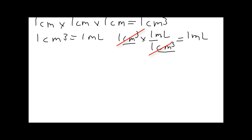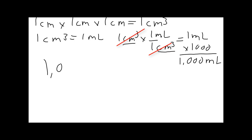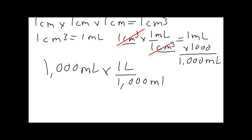And now, since there are a thousand little cubes in this box, we can then multiply that by a thousand. So when you do that math, you can see we would have one thousand milliliters. Then if we apply the conversion factor with one liter on top and a thousand milliliters on bottom, milliliters cancels with milliliters, and we're left with one liter.